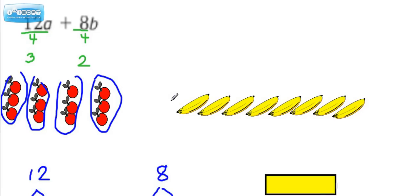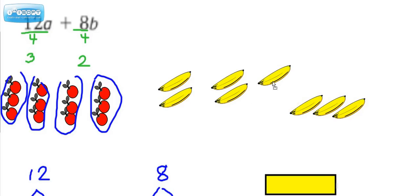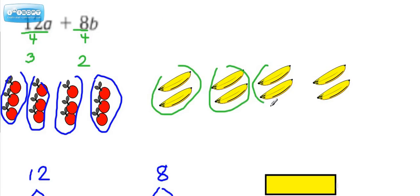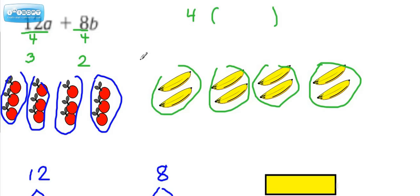Now let's do the same thing with the bananas. We decided 8 divided by 4 is 2, so let's put 2 bananas in each group and circle our groups. We have 4 groups here, and 4 groups here. So we have 4 groups of 3 apples, plus 4 groups of 2 bananas.